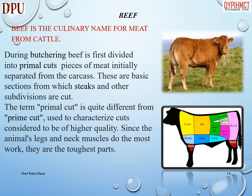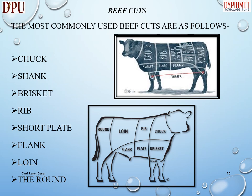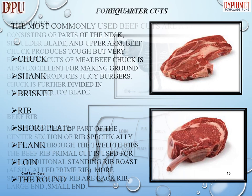Beef is the culinary name for meat from cattle. During butchering, beef is first divided into primal cuts — pieces of meat initially separated from the carcass — from which steaks and other subdivisions are cut. The term primal cut is quite different from prime cut, which is used to characterize cuts of higher quality. Since the animal's legs and neck muscles do the most work, they are the toughest parts. The most commonly used beef cuts are: chuck, shank, brisket, rib, short plate, flank, loin, and the round.